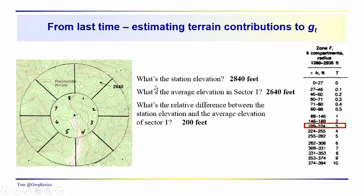So we got started on this the last time. We were looking at the F ring. This F ring goes from 1280 feet to 2936 feet. It's divided up into eight sectors. And we made an estimate for the average elevation in sector one. And that estimate was 2640 feet. The station elevation was 2840. That gave us an elevation difference of 200 feet.